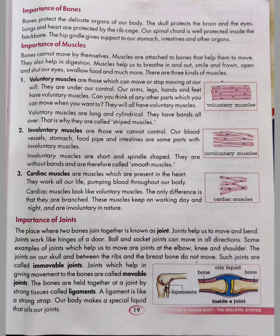Now let's study the importance of bones. Bones protect the delicate organs of our body — like the heart, which is a muscular organ, and the lungs. The skull protects the brain and the eyes. Lungs and heart are protected by the rib cage. Our spinal cord is well protected inside the backbone. The hip girdle gives support to our stomach, intestines and other organs.